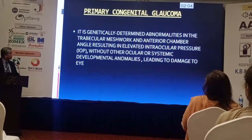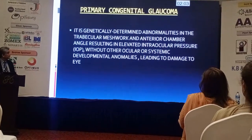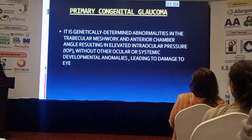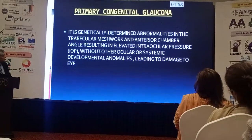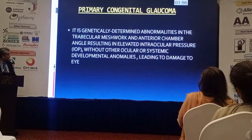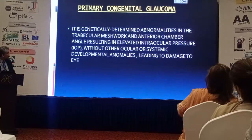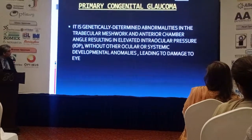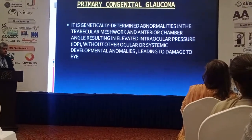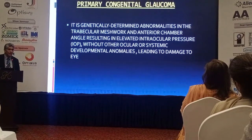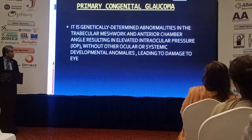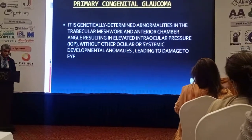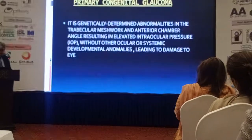Primary congenital glaucoma is a genetically determined abnormality in the trabecular meshwork and anterior chamber angle, resulting in elevated intraocular pressure leading to damage to the eye without other ocular or systemic developmental anomalies. The damage is to the whole eye, the problem is in the trabecular meshwork and anterior chamber angle, and it is genetically determined.